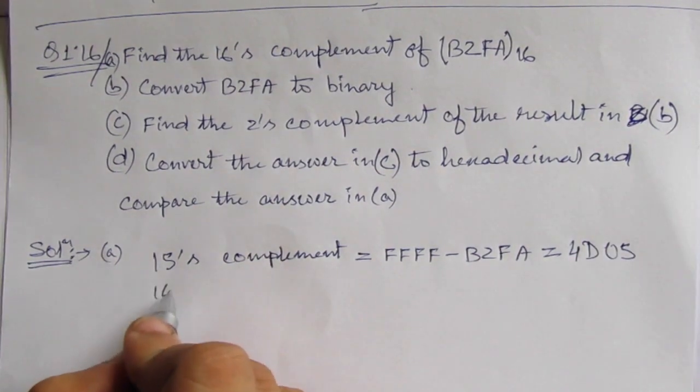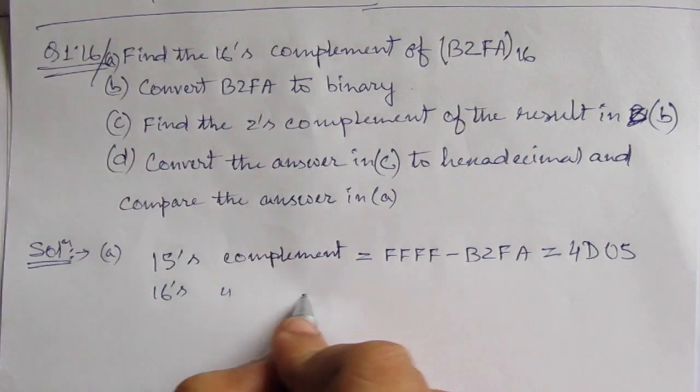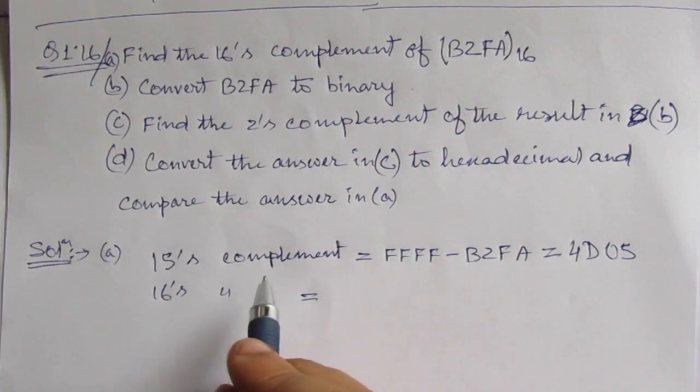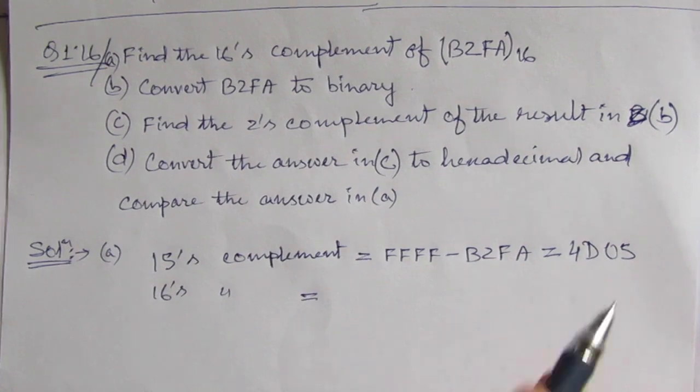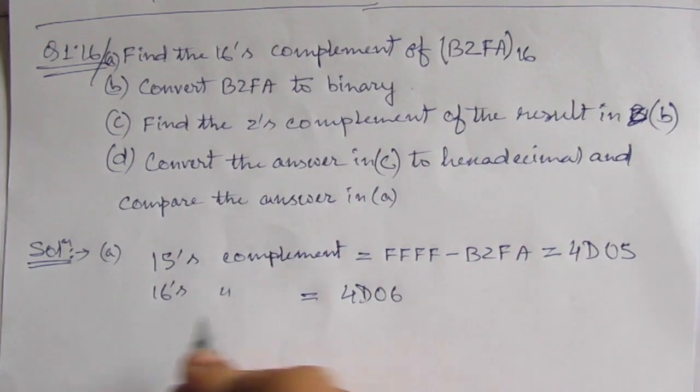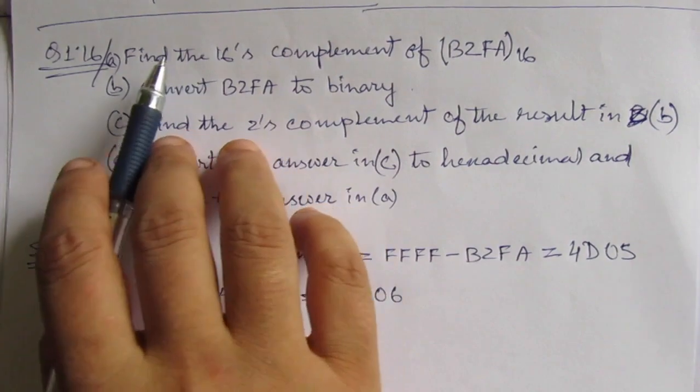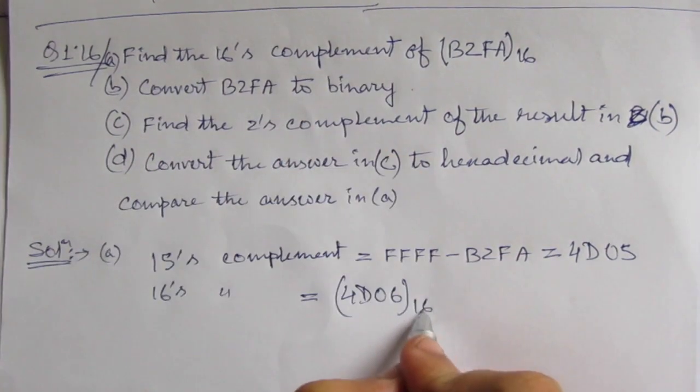So the 15's complement will be FFFF minus B2FA. So we will get 4D05. Now let us find out the 16's complement. For finding out the 16's complement, we have to add 1 to the 15's complement: 4D06. So this is the 16's complement. So the first part is over. This is hexadecimal number.